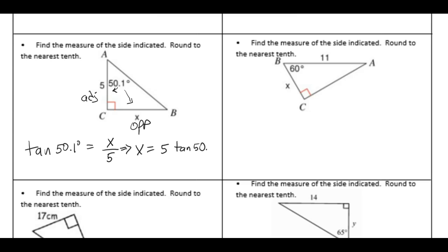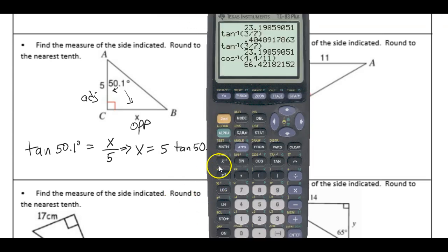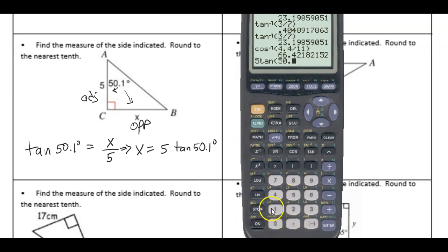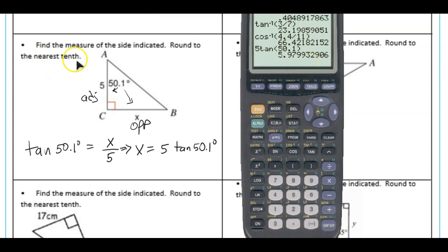And that we can go to our calculator to evaluate. It is just 5 and tangent and 50.1. This is in degree mode and we get 5.9799. To the nearest tenth would be 6.0.